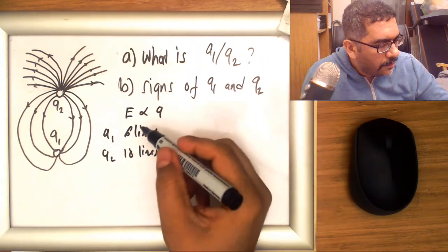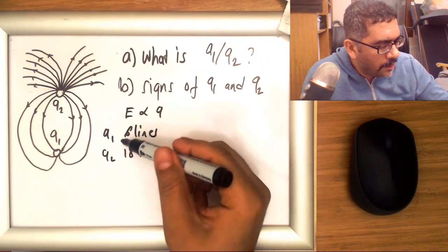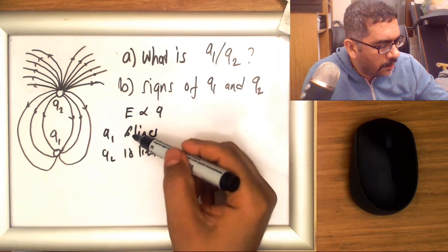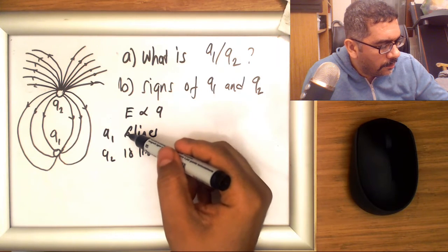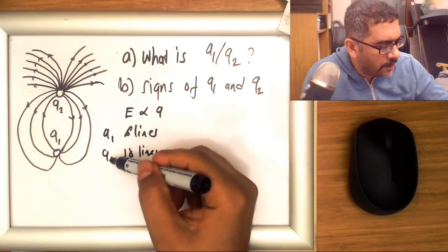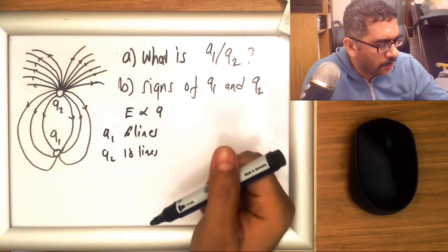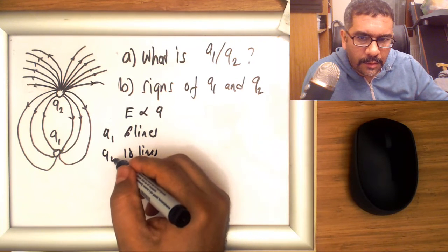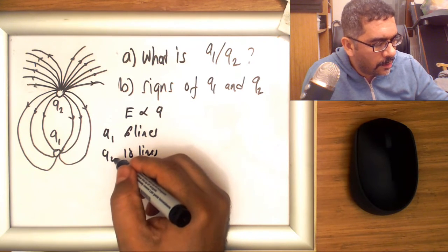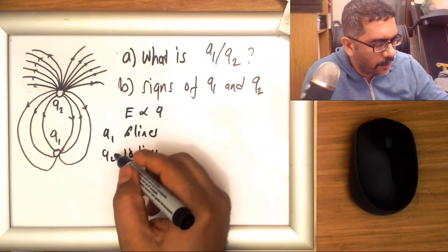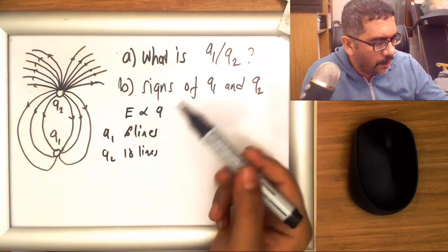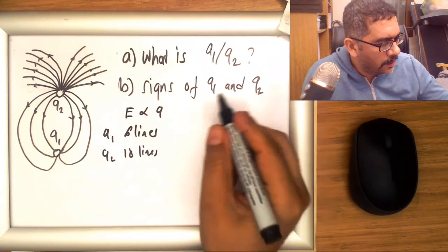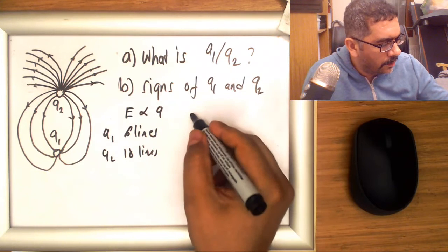So that means the electric field intensity around q1 is exactly one-third of the electric field intensity around q2. That means q2 will have three times the magnitude as the charge of q1. Why? Because the field lines—let me write this as...